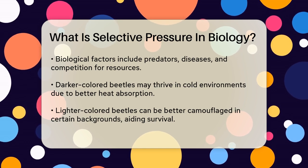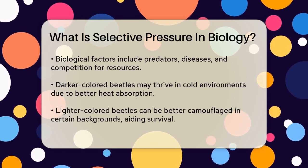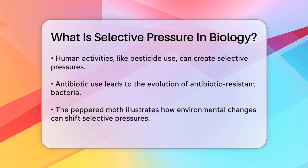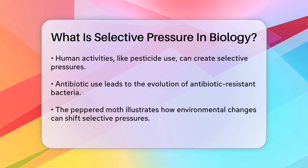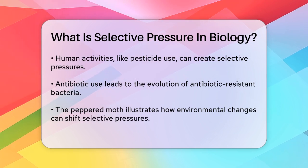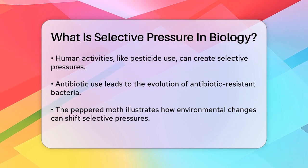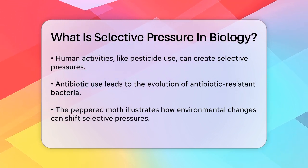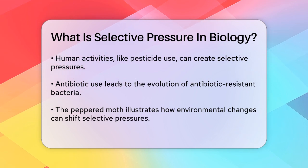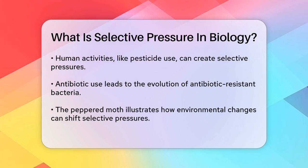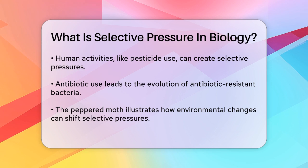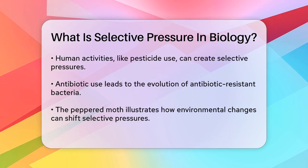Human activities can also act as selective pressures. For example, the use of pesticides can lead to the evolution of pesticide-resistant insects. Similarly, the development of antibiotics has resulted in the evolution of antibiotic-resistant bacteria. These resistant bacteria survive and reproduce, passing on their resistant genes to the next generation.